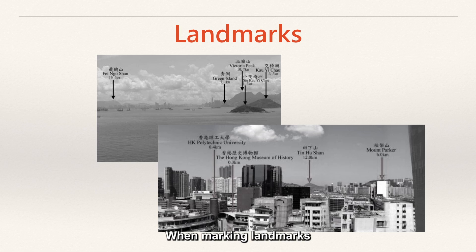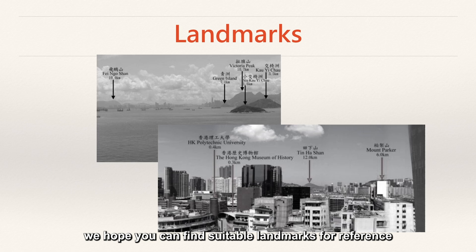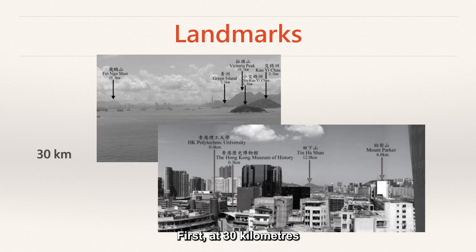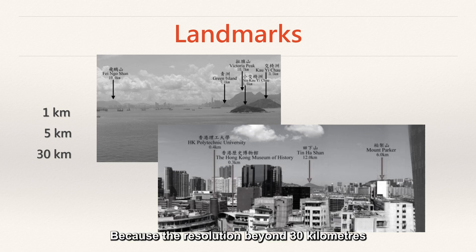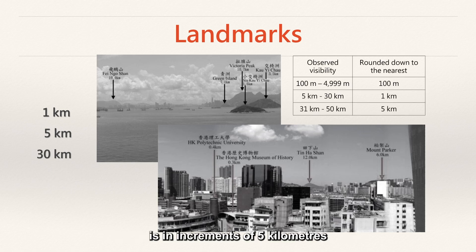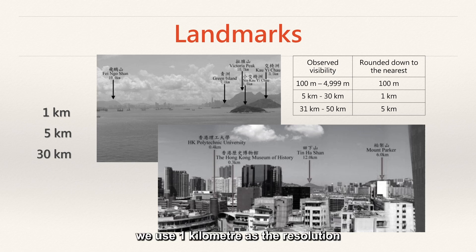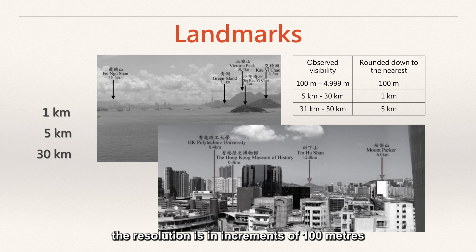When marking landmarks, there are several distances you should find suitable landmarks for reference: first at 30 kilometers, then 5 kilometers, then 1 kilometer. Why those distances? Because the resolution beyond 30 kilometers is in increments of 5 kilometers. Between 5 kilometers and 30 kilometers, we use 1 kilometer as the resolution. When visibility drops below 5 kilometers, the resolution is in increments of 100 meters.